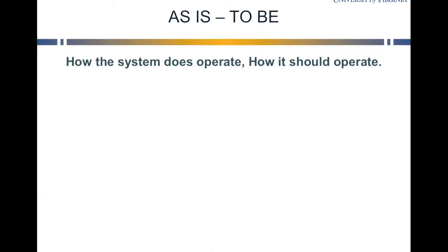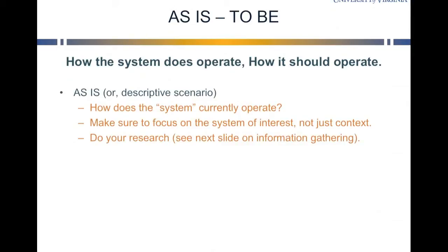Generalizing the problem — outscoping it — works in tandem with looking at how the current system operates and how it should operate. How the current system operates can be called the descriptive scenario or the as-is. You want to focus not just on the context around the situation but really the system of interest. For instance, if your problem is focused on getting wine shipped as quickly as possible once it's bottled, then focus on that. You don't need to focus on the entire wine operation or the wine industry — that would be another type of analysis, not a descriptive scenario.